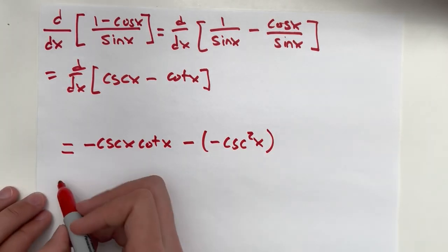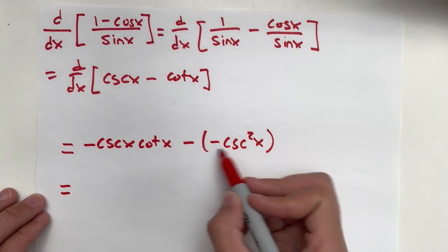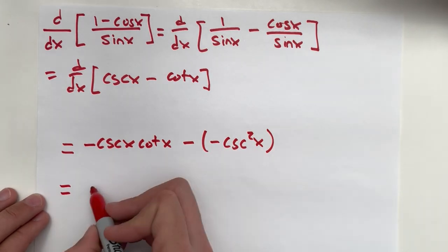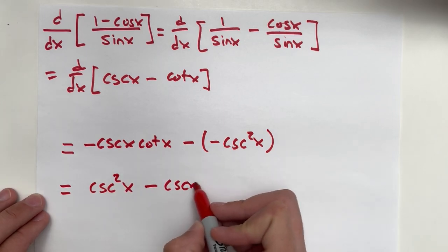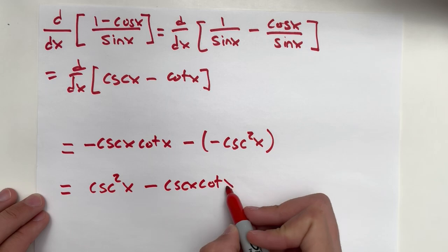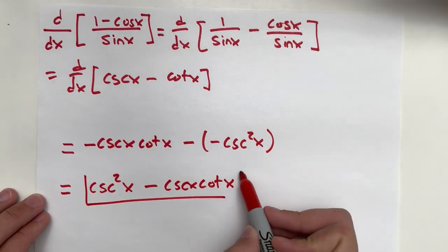So just to simplify this all out, make it nice and pretty, we have positive cosecant squared x here. Cosecant squared x minus cosecant x cotangent x. That, my friends, is the solution.